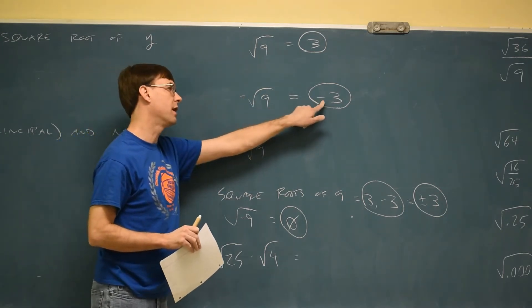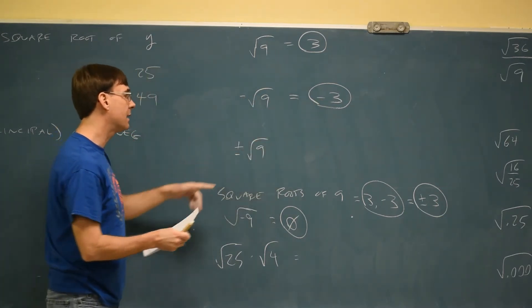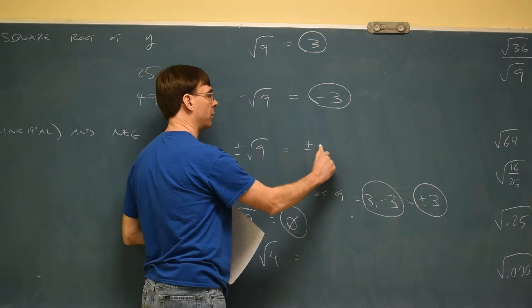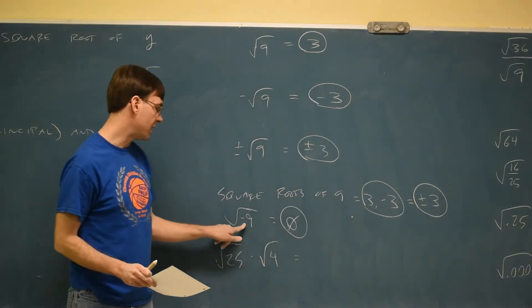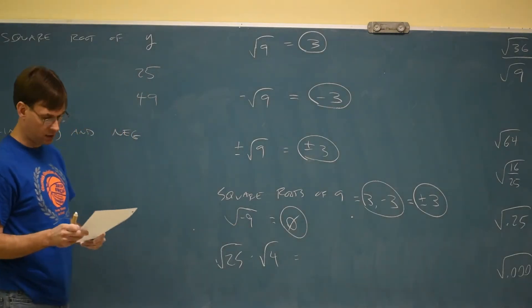You see this, you do only the negative version. You see this, we're back to doing them both. You see words, you're back to doing them both. If they sneak a negative underneath, then you just can't do it.